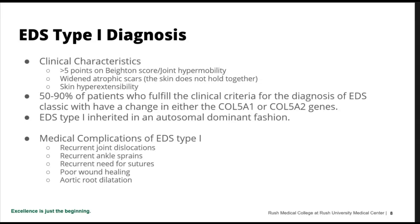The diagnosis of Ehlers-Danlos type 1 requires greater than 5 points on the Beighton score with widened atrophic scars and skin hypersensibility. For instance, if a patient comes in saying someone thinks they have Ehlers-Danlos syndrome and I ask if they've ever needed sutures and they say no, it's pretty much off my list. 50% to 90% of patients who fulfill the clinical diagnosis have a change in either the collagen 5A1 or 5A2 gene.